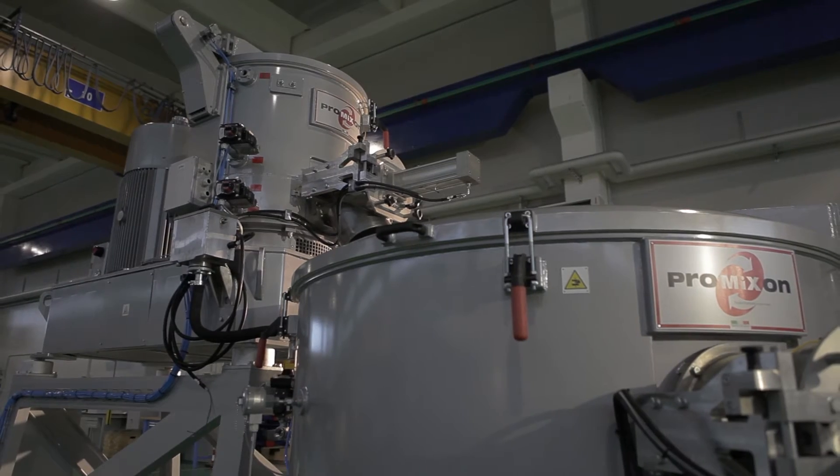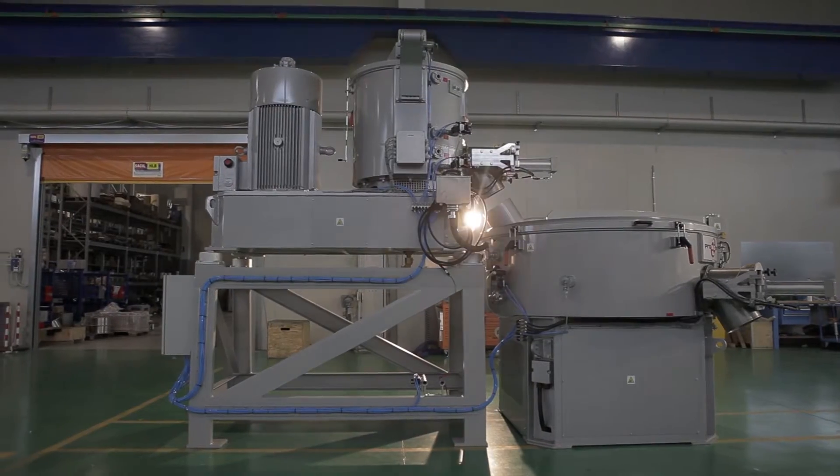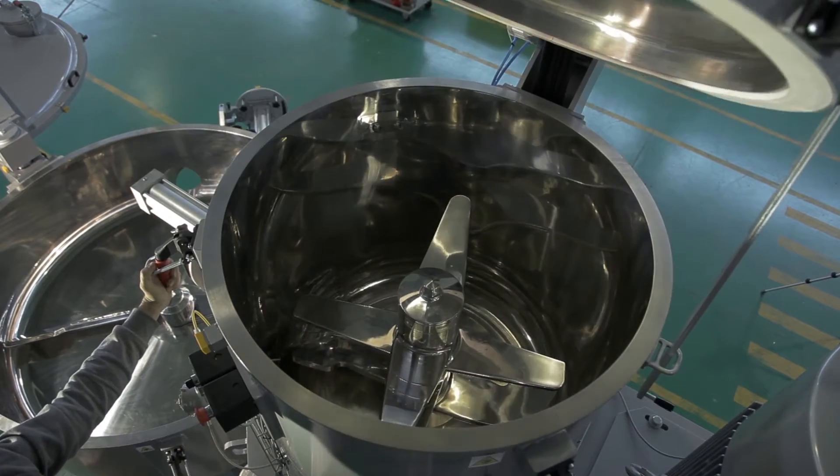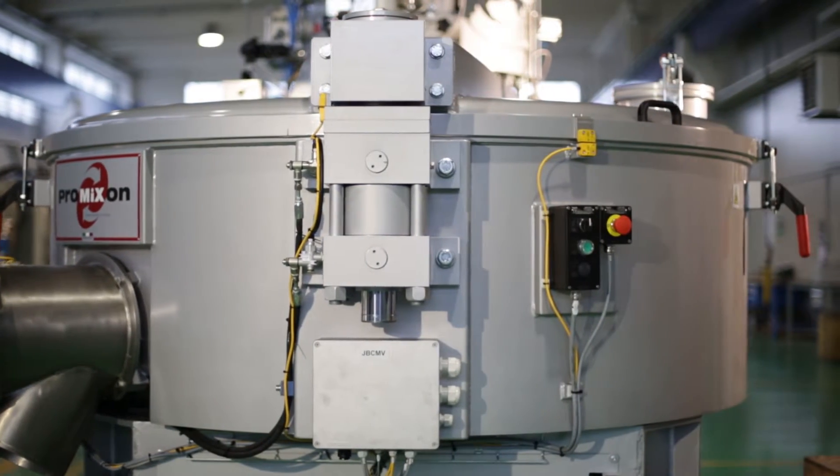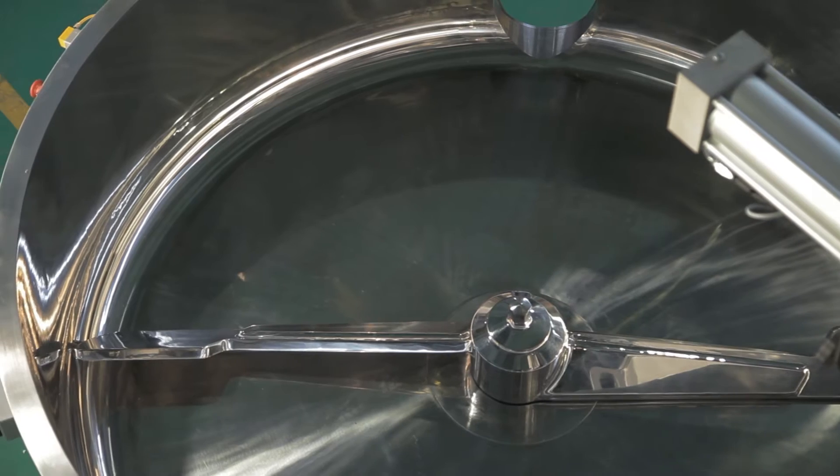Today we can introduce you to the following system consisting of two units, the TMX Turbomixer with 500 liter capacity and the CMV Vertical Cooler with a 1500 liter capacity.